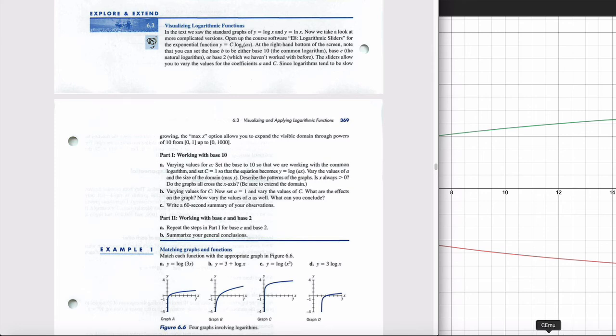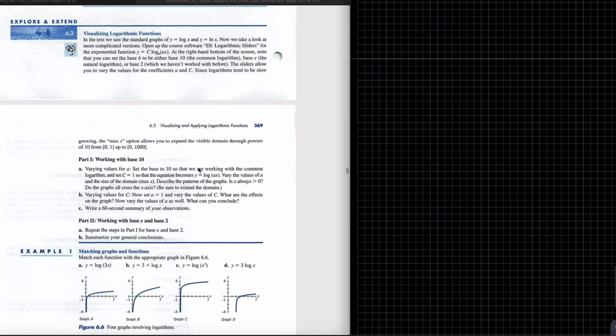Now let's do some example problems. Matching graphs and functions. Match each function with the appropriate graph. I look for the anchor points. If I put 1 in for x, 1 times 3 is 3, the logarithm base 10 of 3 is what? Go ahead and go to your calculator and put in log 3. I get some kind of 0.477. So which one is at (1, 0.477)? Well, it's not this one. This one goes through (1,0). This one is this horizontal stretch at this first graph. So A goes with A.